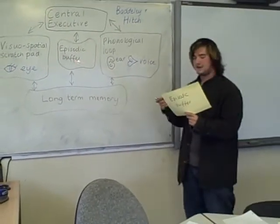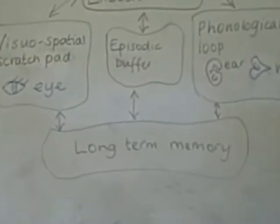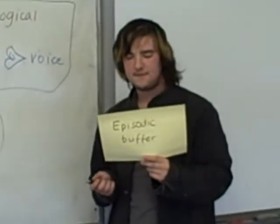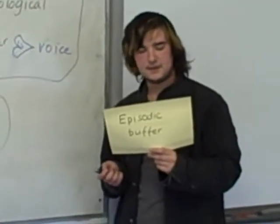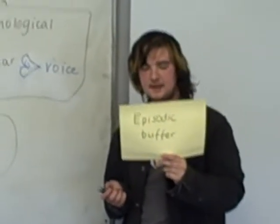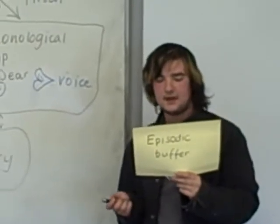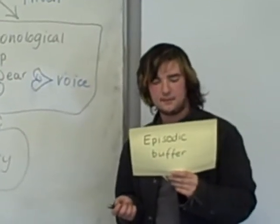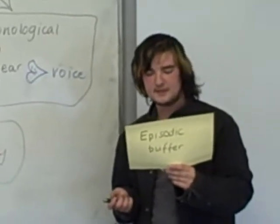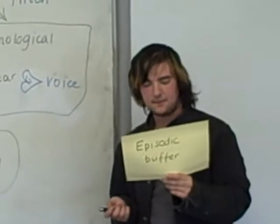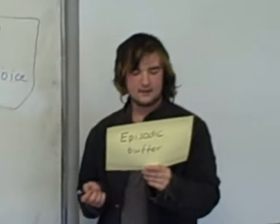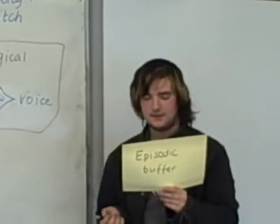We now have the episodic buffer. This was added to the working memory model by Bradley more recently, in the year 2000. It is where you take information from long-term memory and combine it with the visuospatial scratchpad and the phonological loop. You can then visualise it and say it with your inner voice to create a new image. For example, imagine an elephant playing ice hockey — the episodic buffer allows us to take existing knowledge and manipulate it into a new scenario.